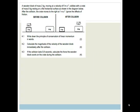Remember last week we looked at the work specifically from this last term. So, it says a wooden block of mass 2 kilograms moving at a velocity of 5 meters per second collides with a crate of 9 kilograms resting on a flat horizontal surface. After the collision, the crate moves at 1 meter per second. Ignore the effect of friction. It says write down the principle of conservation of linear momentum in words.